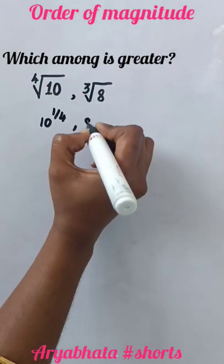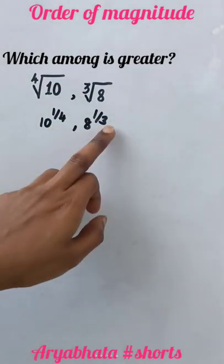We can write this as 10 to the power 1/4 and 8 to the power 1/3. The powers are different.